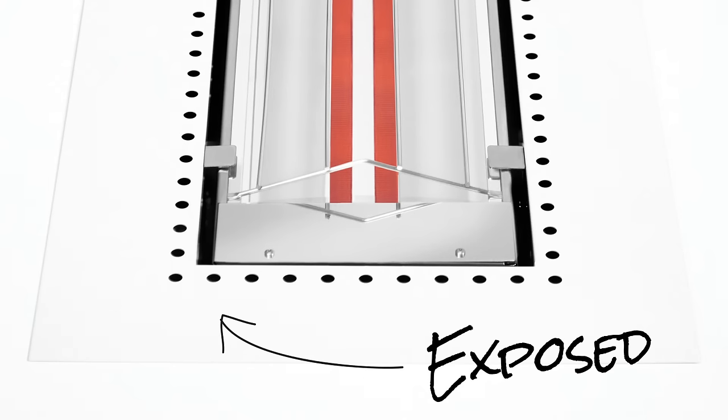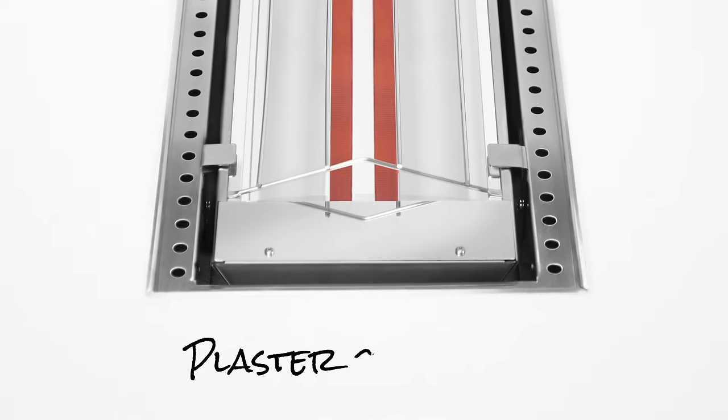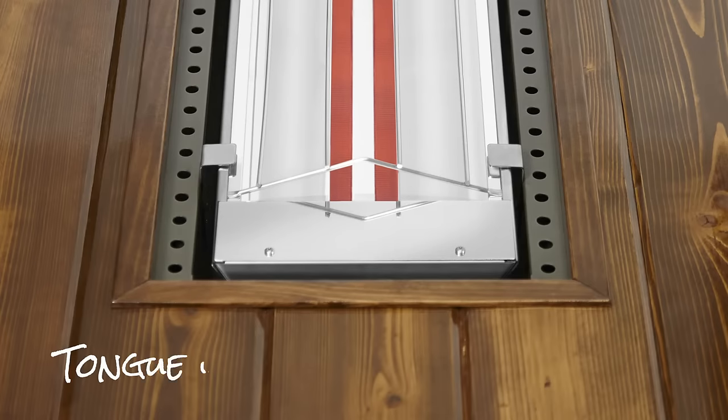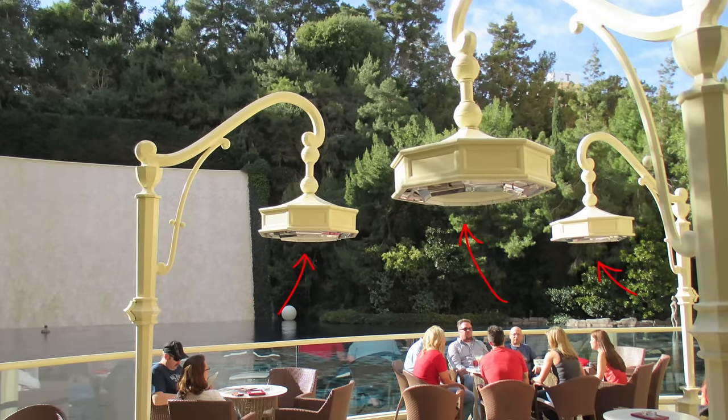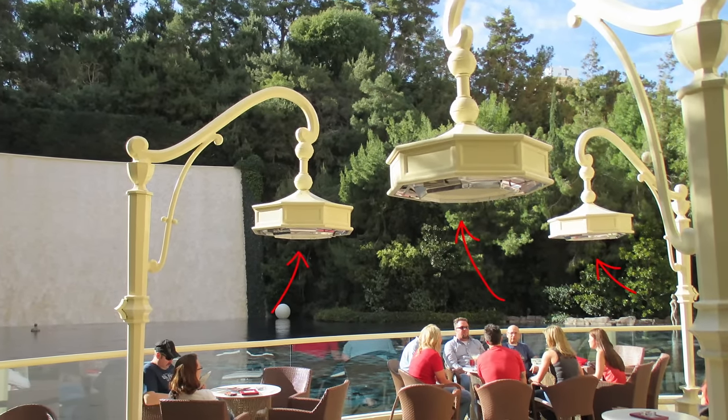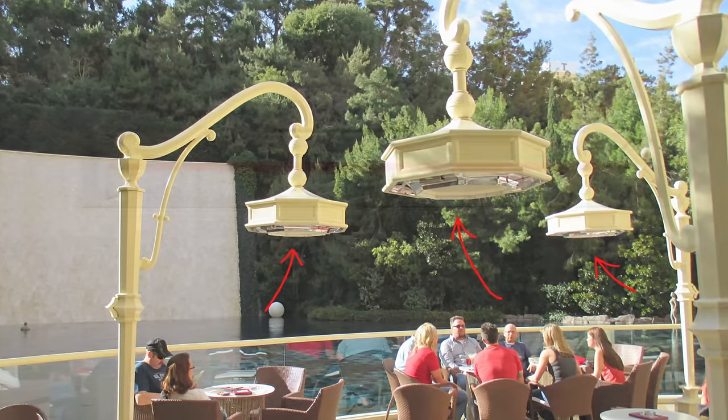The flush mount frame may be installed with the edges exposed or can be covered by drywall, plaster, stucco, or tongue-and-groove wood sealing treatment to blend seamlessly into your decor. Because we manufacture all of our products in-house, we make it easy for your design team to work with us to develop heating systems for any special project.